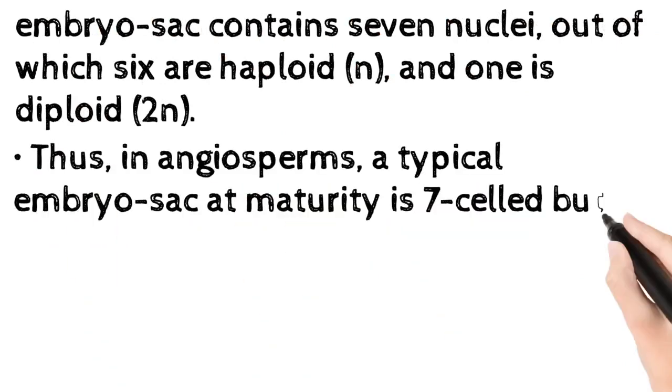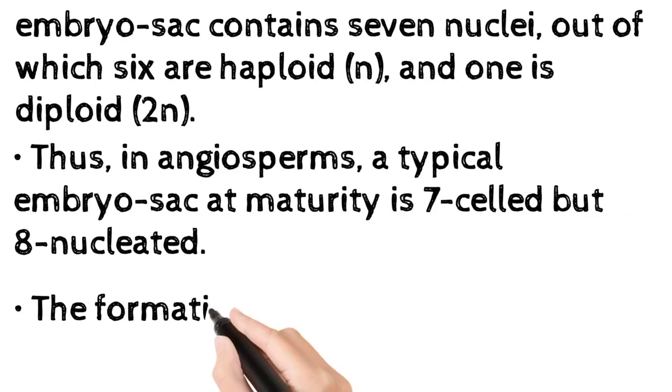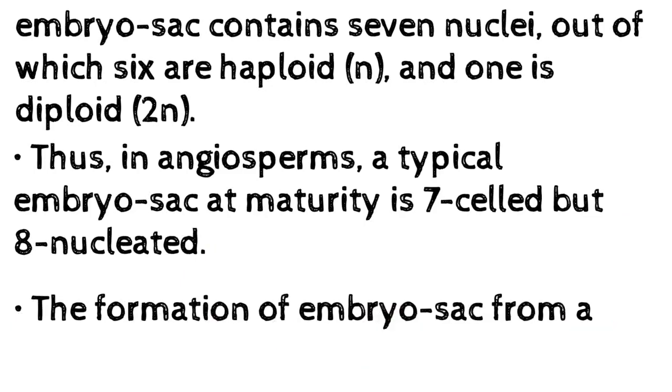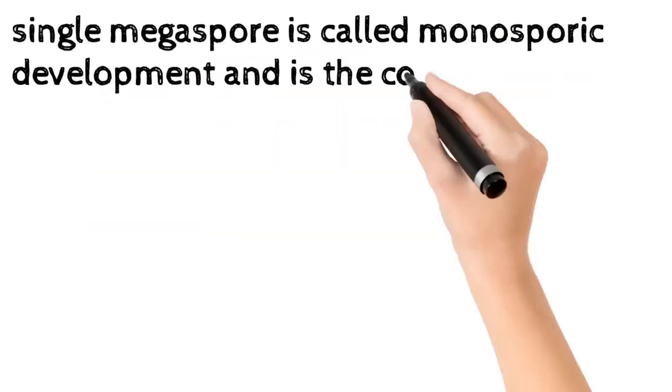Thus, in angiosperms, a typical embryo sac at maturity is seven-celled but eight-nucleated. The formation of an embryo sac from a single megaspore is called monosporic development.